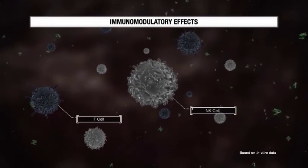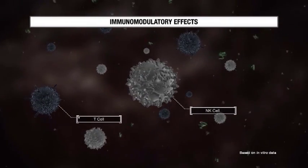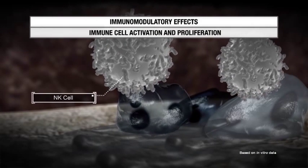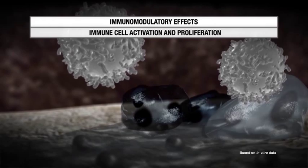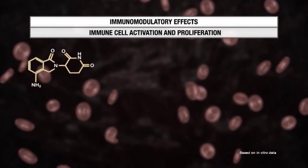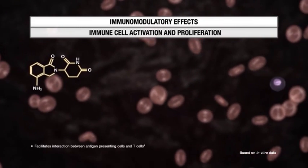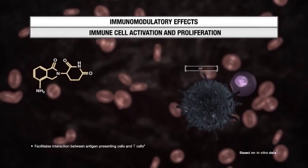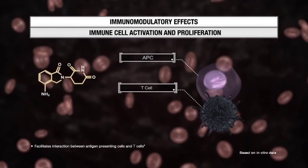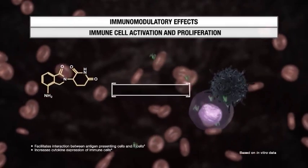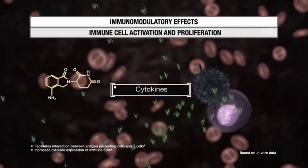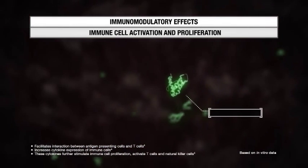The proposed immunomodulatory effect of Revlimid is to increase the activation and proliferation of various immune cells. Revlimid enhances immune cell activation and proliferation by facilitating the interaction between antigen-presenting cells and T-cells and increasing the expression of cytokines controlling the proliferation, differentiation, and survival of various immune cells.